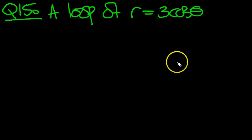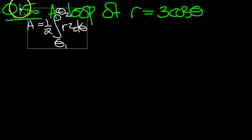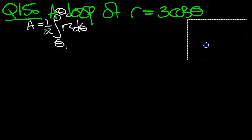Find the area in a loop of this curve here, r equals 3 cos theta. So let's have a go at this one. Let's just put down our formula for the area then. Here it is here. Let's put that there.